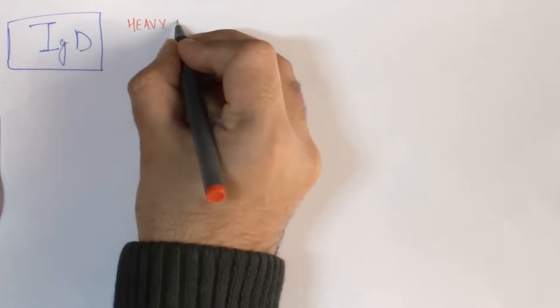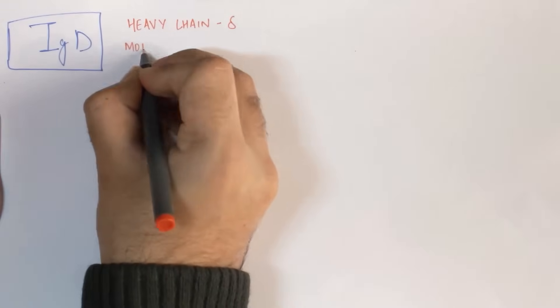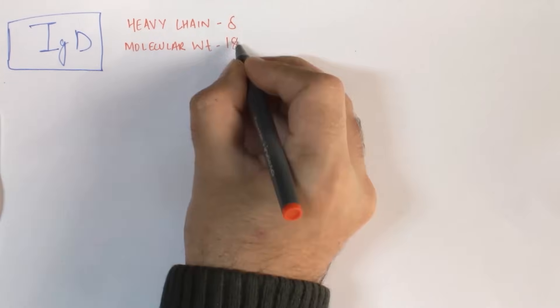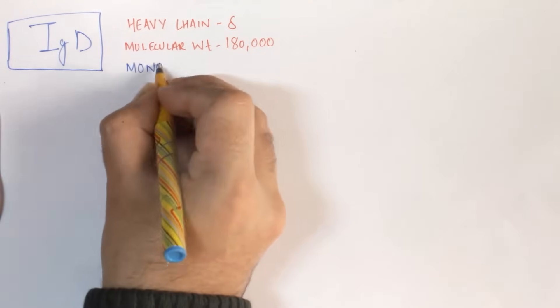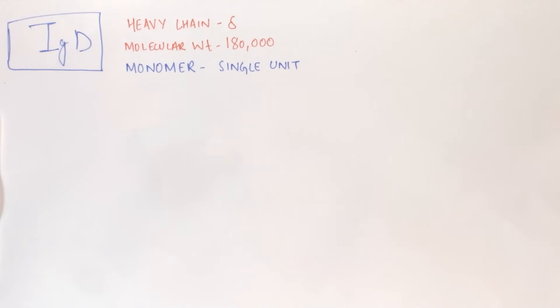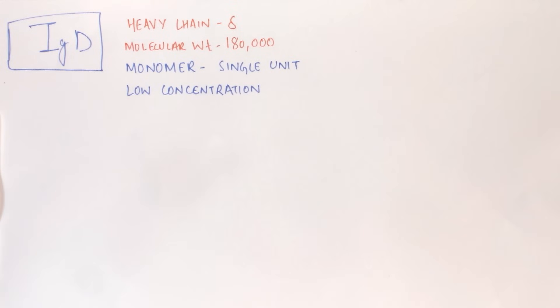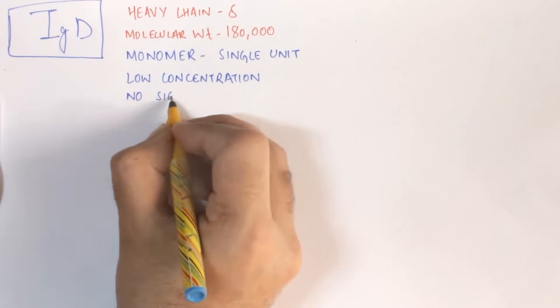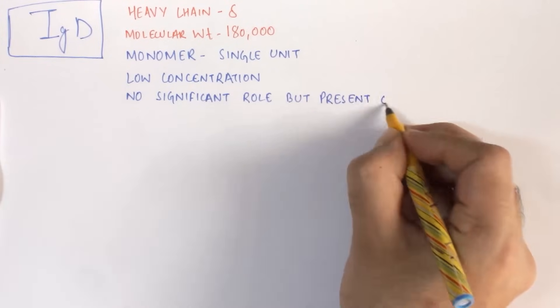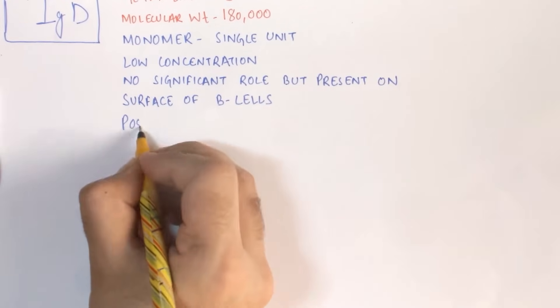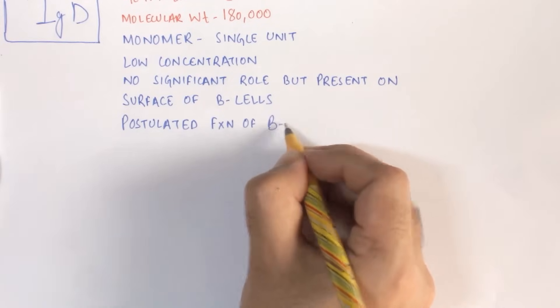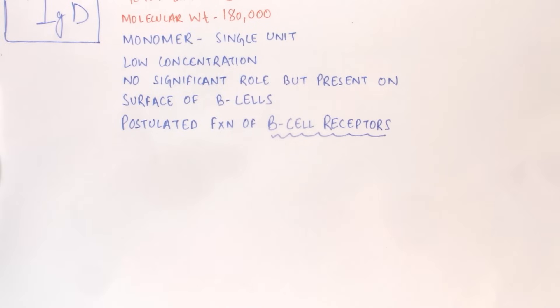The fifth type of antibody is IgD. The heavy chain in IgD is delta, and the molecular weight of IgD is 180,000. It is also a monomer, consisting of a single unit, and is present in the body in low concentration. IgD has no significant known role in the body, but it is present on the surface of B cells and is postulated to act as a B cell receptor for antigens.